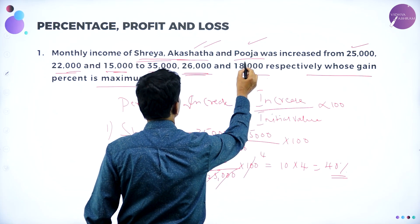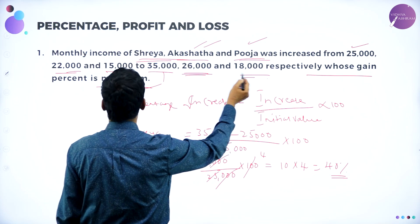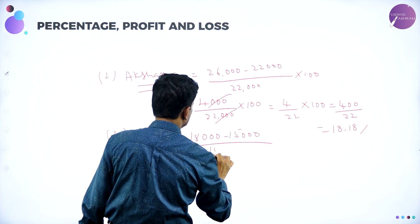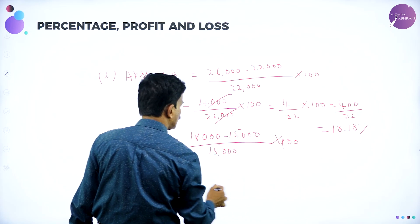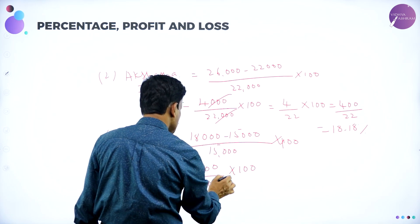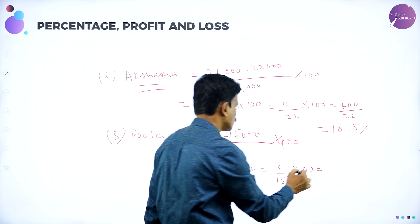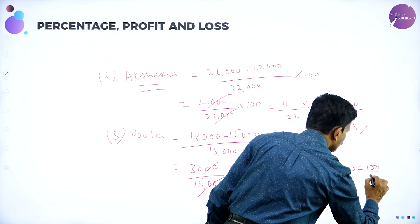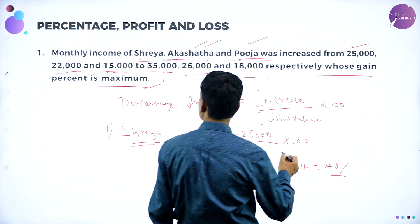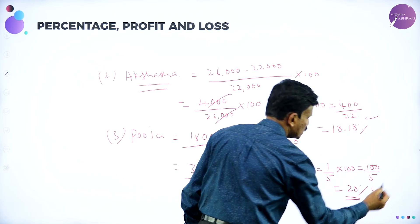Similarly for Puja: her income increases from 15,000 to 18,000. The percentage increase is 18,000 minus 15,000 divided by 15,000, into 100. That is 3,000 divided by 15,000 into 100, which simplifies to 1 over 5 into 100, that is 100 divided by 5, equal to 20 percent. So Shreya is 40 percent, Akshata is 18.18 percent, and Puja is 20 percent.